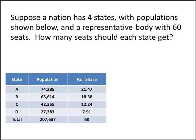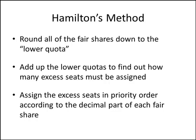Hamilton's method gives us a way to solve this problem. The method says to round all of the fair shares down to what we call the lower quota. We'll add up those lower quotas, which will always add up to a number less than the number of seats we're looking for, and that will tell us how many excess seats we'll have to assign. We'll assign those excess seats in priority order according to the decimal part of each fair share.